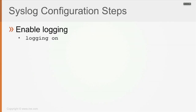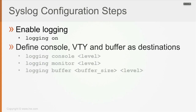For syslog configuration steps: first, enable logging with the 'logging on' command — it's enabled by default, but verify it's there. Then define console, VTY, or buffer destinations with the appropriate level: 'logging console notifications' or informational, 'logging monitor' likewise, and 'logging buffer debugging'. For the buffer, you can configure not only the logging level but also the buffer size, because depending on the debug you run, you may need a larger buffer to retain all output. Buffer size depends on the router's available memory.